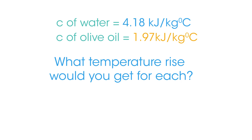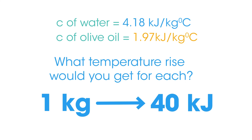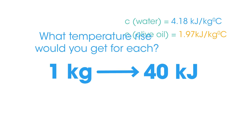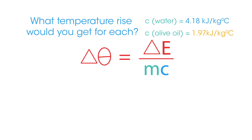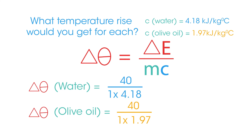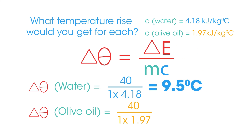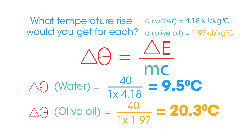What temperature rise would you get for each if one kilogram of each had 40 kilojoules of energy transferred? If we rearrange the equation, Δθ gives the temperature rise. For water we get 9.5 degrees Celsius, and for olive oil we get 20.3 degrees Celsius.